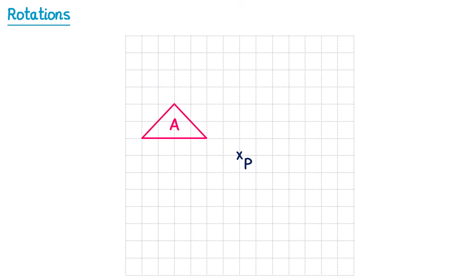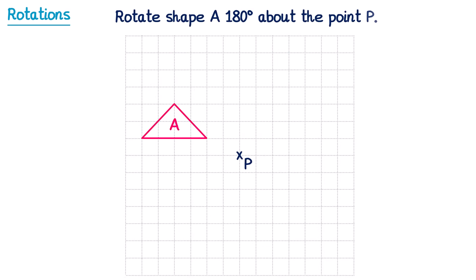Sometimes you may be given a shape and asked to rotate it around a particular point. So for this question, it says rotate shape A 180 degrees about the point P. To do a question like this, I'd use a piece of tracing paper. First of all, trace around the shape that you're going to rotate, and then take a pencil and place it firmly onto the point you're rotating around — so we'll place a pencil on the point P here. Then, with this firmly pressed in place, turn your tracing paper the amount of degrees you've been asked to. For this one it's 180 degrees, so that's half a turn.